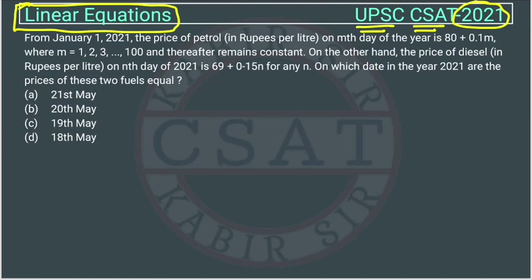From January 1st, 2021, the price of petrol on the mth day of the year is determined by this equation, where m could be 1, 2, 3 up to 100, and thereafter the price remains constant. So m is representing the day — the first day, the second day — and the price is determined by this equation. After 100 days, the price becomes constant.